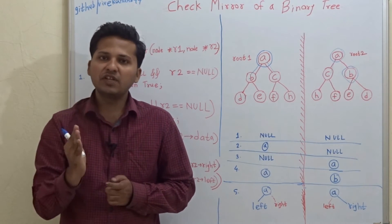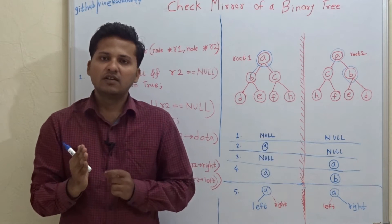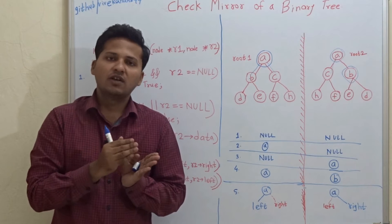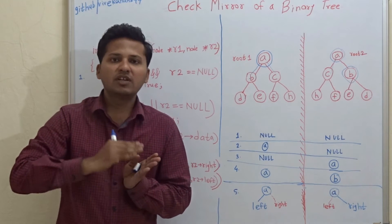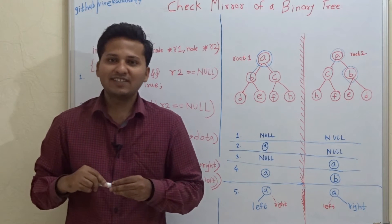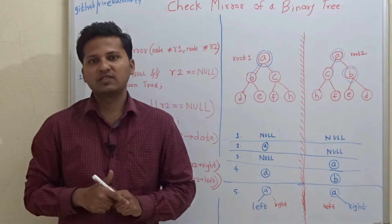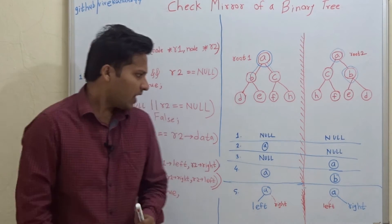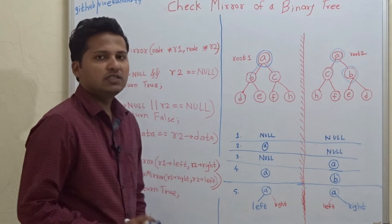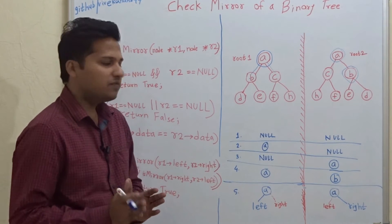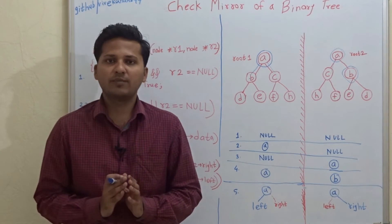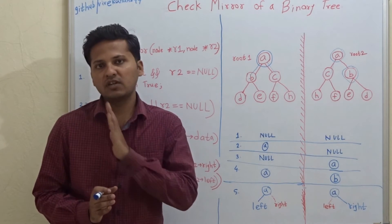For every node in the binary tree, the left child becomes the right child and the right child becomes the left child. Let us see how to write a program for this. For writing the program, we have these 5 conditions. By using these 5 conditions, we can write a recursive program for checking the mirror of a binary tree.